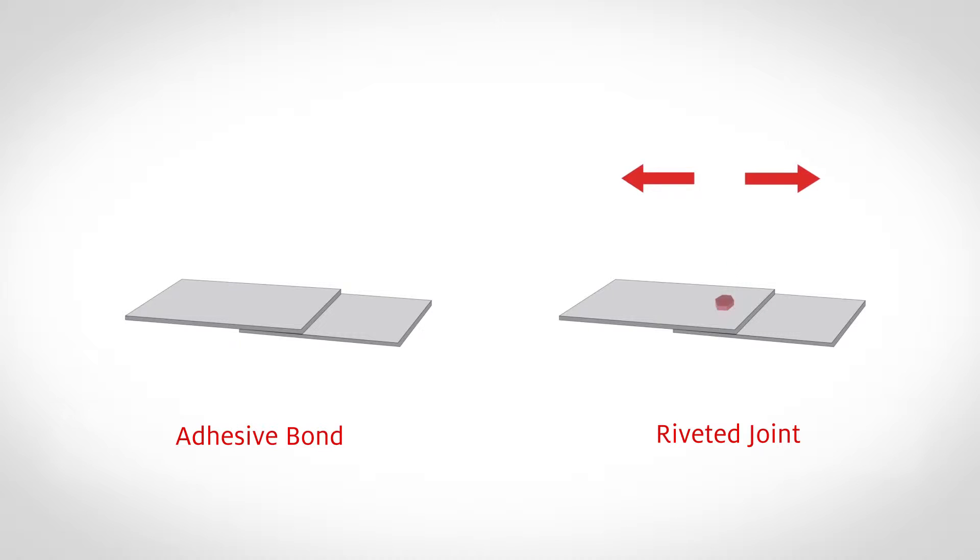This is important because if a material fails at lower strengths, it may not be suitable for some applications. Here we illustrate one of the many advantages to using adhesives over mechanical fasteners. Rather than directing the load at a point, the adhesive distributes it over a larger area, making the adhesive bond more resistant to stresses than a riveted joint.